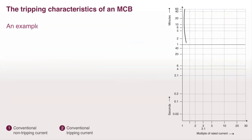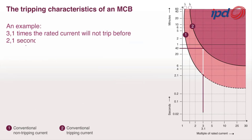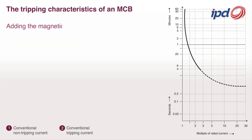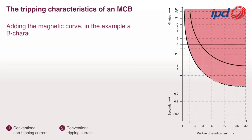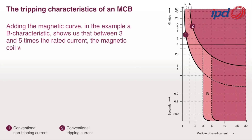An example: 3.1 times the rated current will not trip before 2.1 seconds, and the latest trip will occur after 40 seconds. Adding the magnetic curve, in the example of B characteristic, shows us that between 3 and 5 times the rated current, the magnetic coil will trip the MCB.